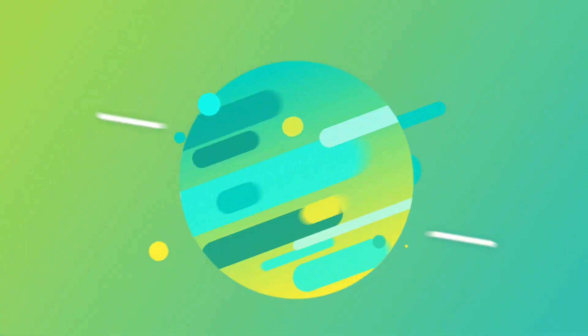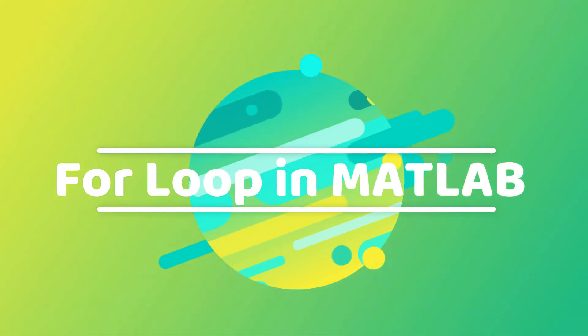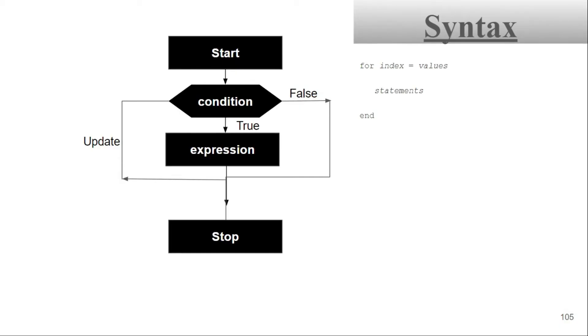Welcome back to this MATLAB series. I am Pankaj Patil and in this video we are going to work on for loops. From this video we are going to work on loops — for loop is used for iterative processes, and when we work on numbers, for loop is the best choice. Now let's move to the syntax and flowchart of for loop.